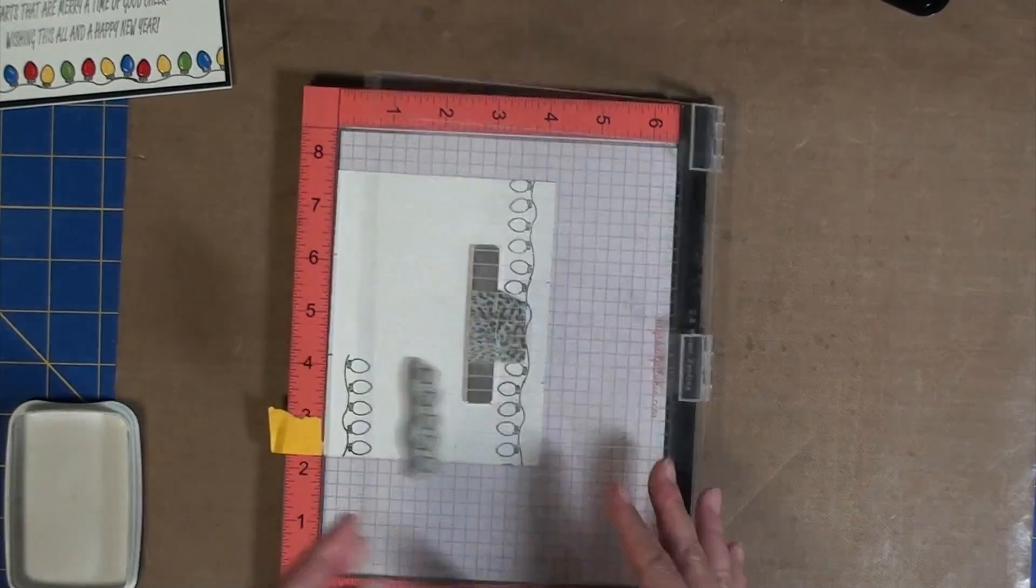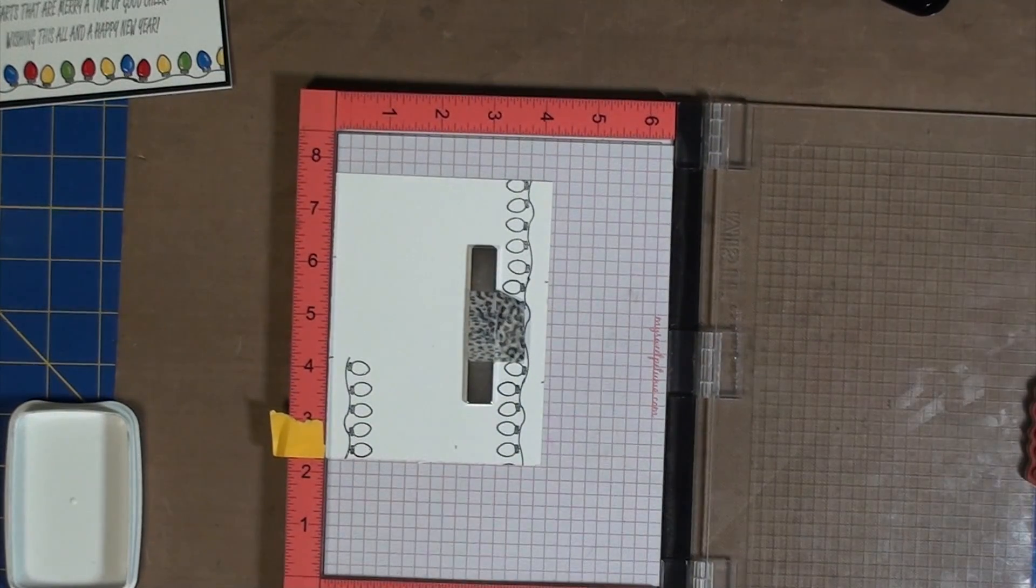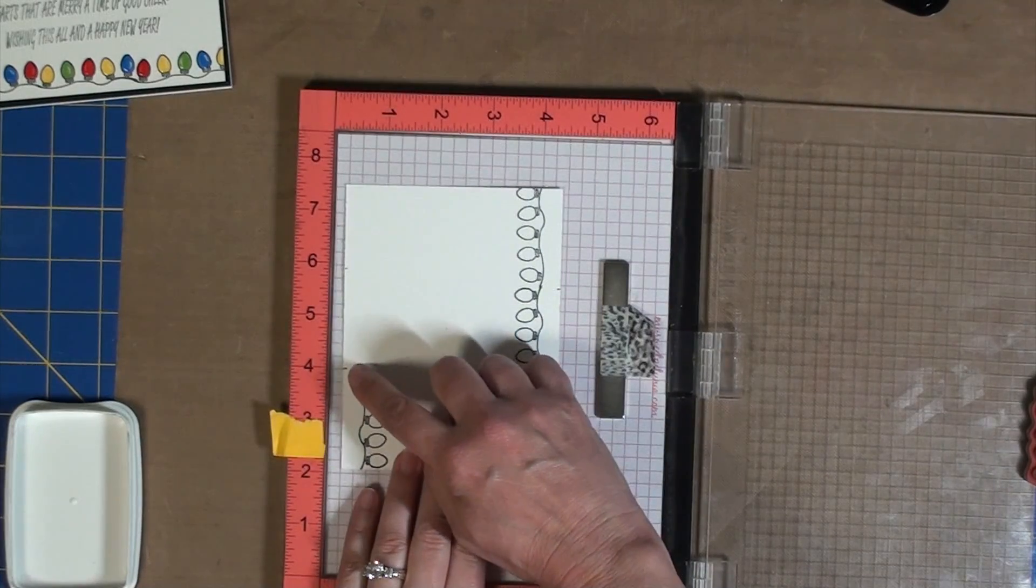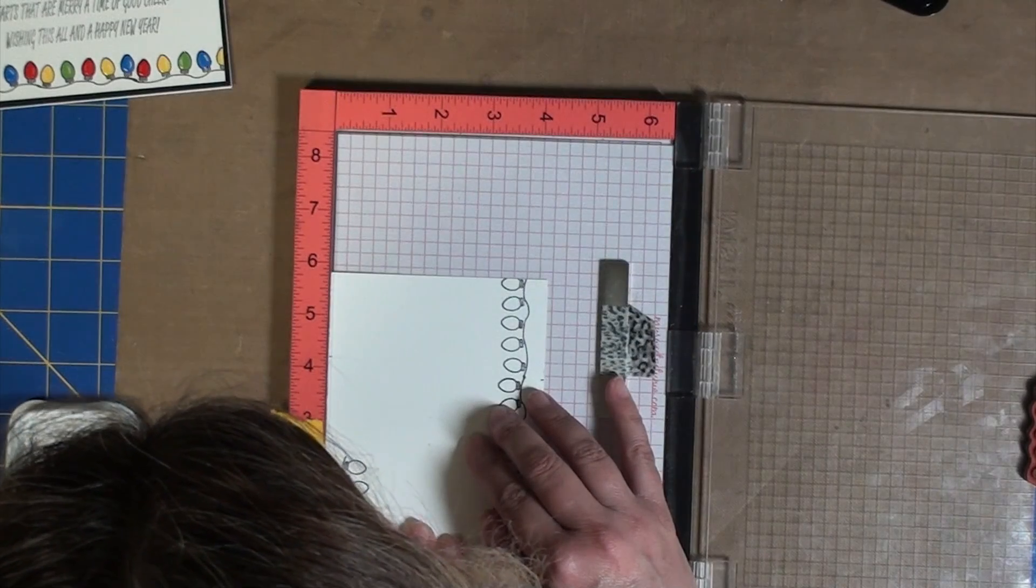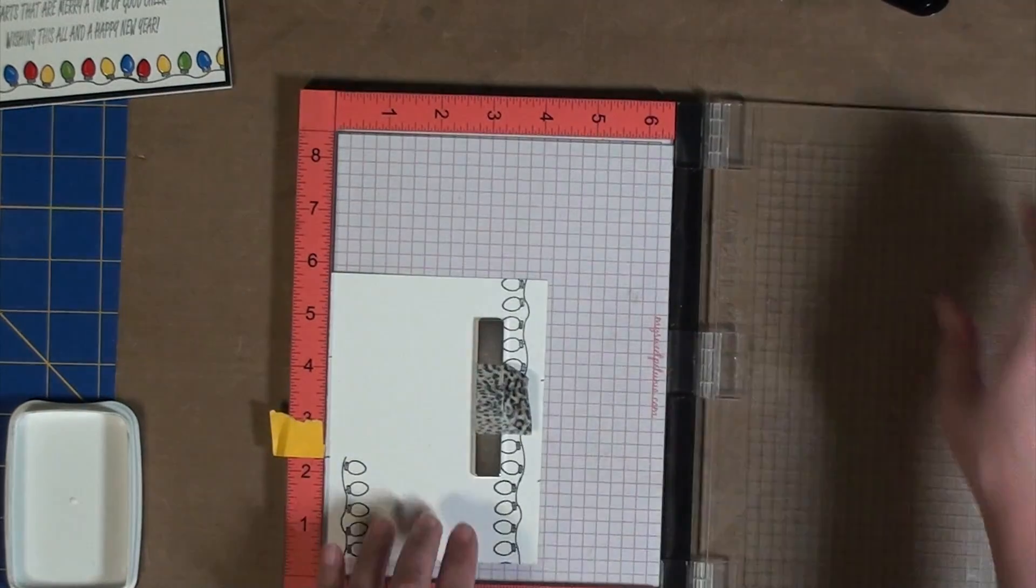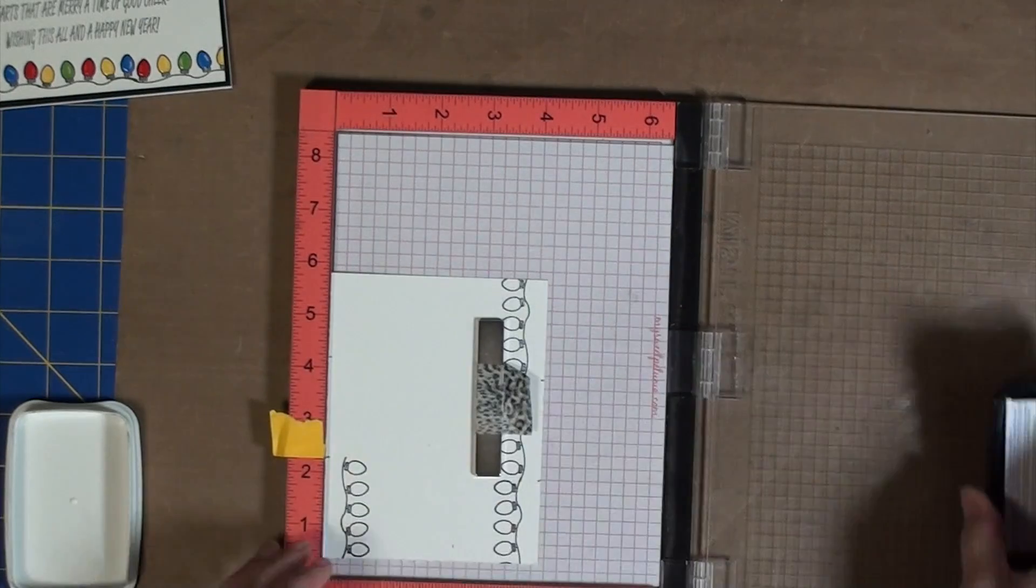And after this is done I'm going to move the paper as you'll see and not the stamp, so the stamp stays right in place but I'm just going to shift it down and line up that next mark that I drew at the edge so that I can stamp it again and have it line up.